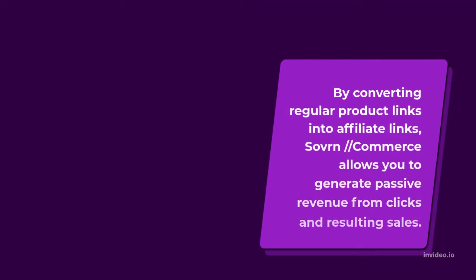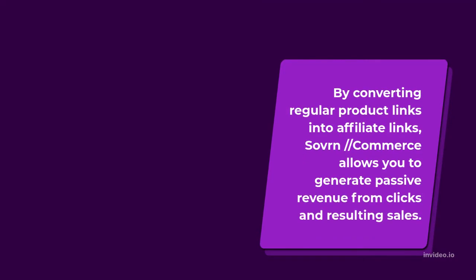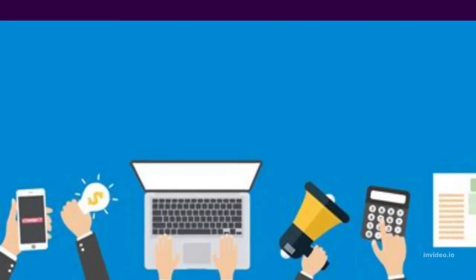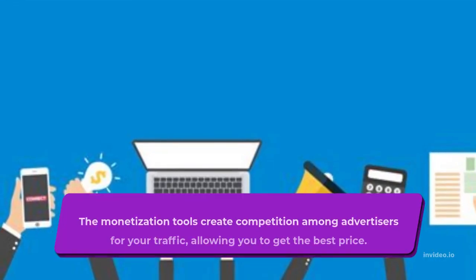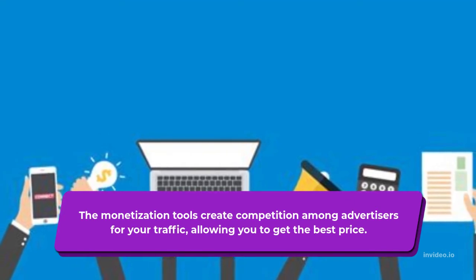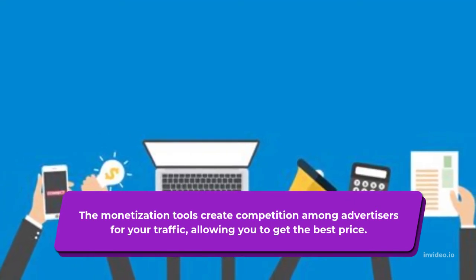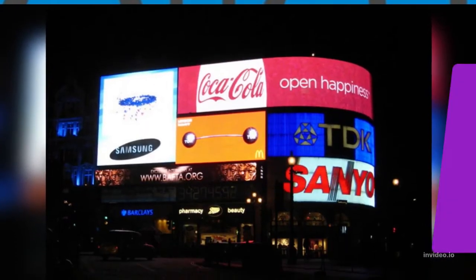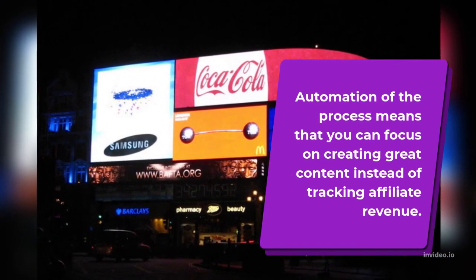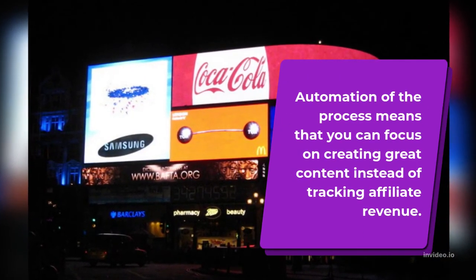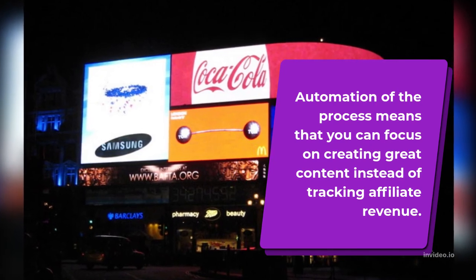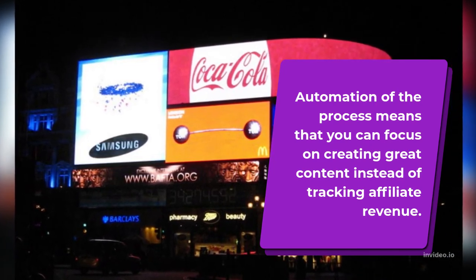By converting regular product links into affiliate links, Skimlinks allows you to generate passive revenue from clicks and resulting sales. The monetization tools create competition among advertisers for your traffic, allowing you to get the best price. Automation of the process means that you can focus on creating great content instead of tracking affiliate revenue.